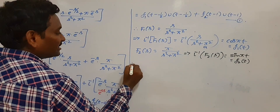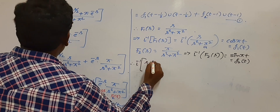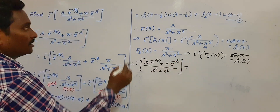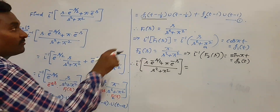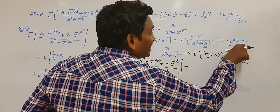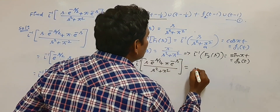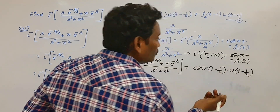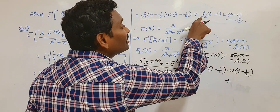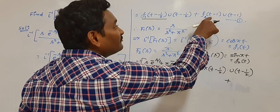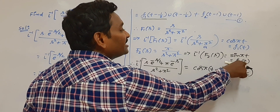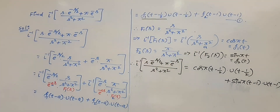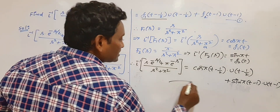Now substitute all values back into equation (1). L inverse of [s·e^(−s/2) + π·e^(−s)] / (s²+π²) equals f1(t−1/2)·u(t−1/2) + f2(t−1)·u(t−1). Since f1(t) = cos(πt), replace t by t−1/2: cos(π(t−1/2))·u(t−1/2). Since f2(t) = sin(πt), replace t by t−1: sin(π(t−1))·u(t−1). This is the complete example on the second shifting theorem.